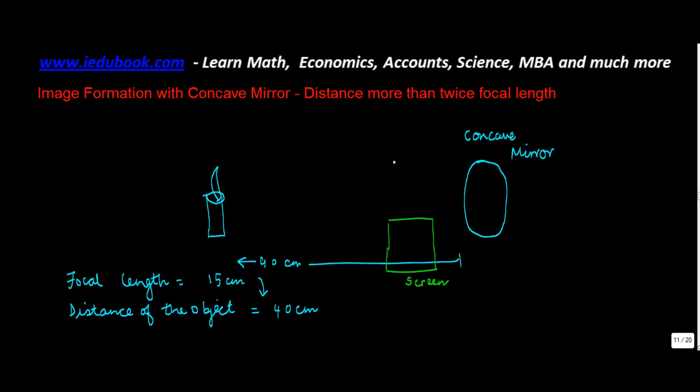So let us say the focal length of this concave mirror is 15 cm. This is what we have assumed here. And the distance of the object from the mirror is 40 cm. So 40 cm is basically more than twice the focal length of the mirror.